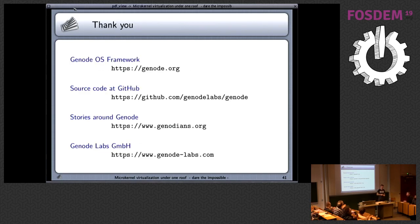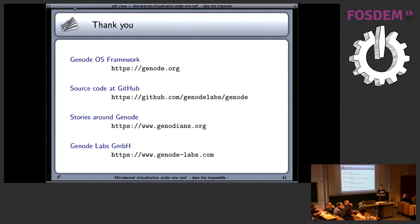Thank you. [Question from audience]: When you map multiple VCPUs to the same handler thread, you inevitably run into situations where the handler thread is on a different CPU than the VCPU. So you need to deliver the event cross-core. Do you know how much performance overhead that causes? [Answer]: For the Nova case, it's not possible to do cross-core. That means if you have a VCPU running on some physical core, you have to have your entry point on the same physical core, so you keep the one-to-one mapping. You also keep the synchronous notion that the VCPU essentially pays for the entire handling of the request.